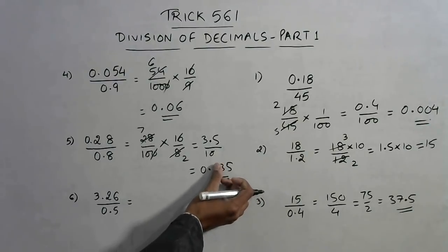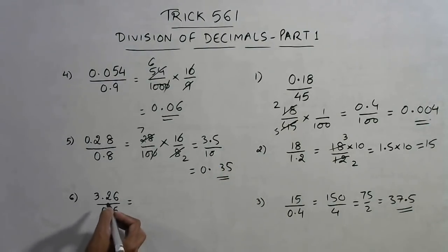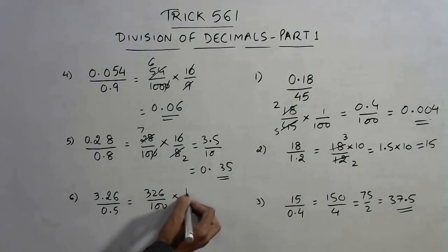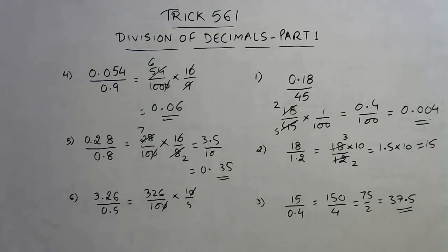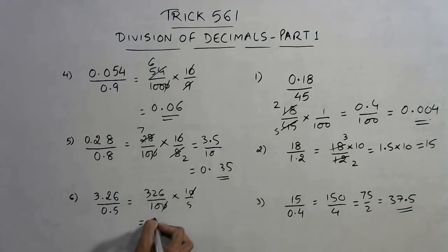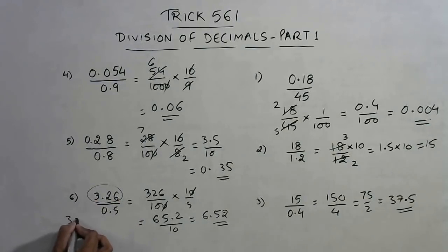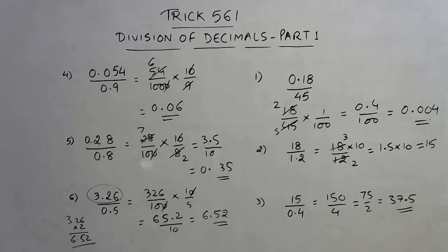For the last question, we have 3.26/0.5. This becomes 326/100 divided by 10/5, so the 10s cancel and you just divide 326 by 5. Working it out: 5 goes into 32 six times (30), remainder 2; 5 goes into 26 five times (25), remainder 1 — giving 6.52. Alternatively, since 0.5 is half, you can simply multiply 3.26 by 2 to get 6.52 directly. Division by 0.5 is very easy using this shortcut.